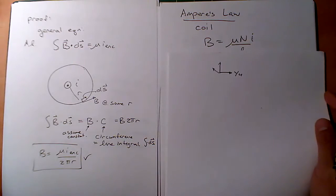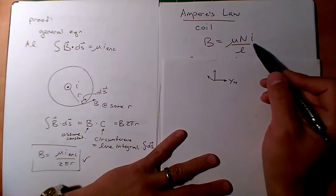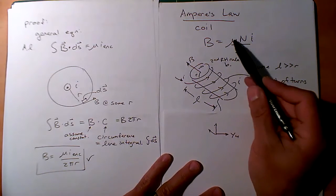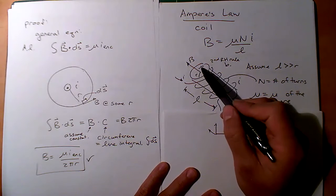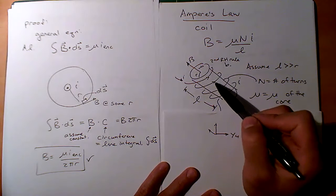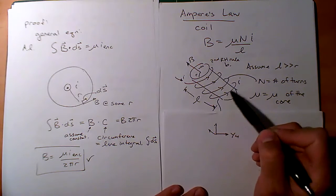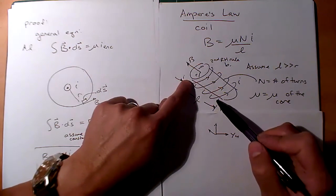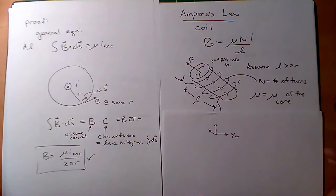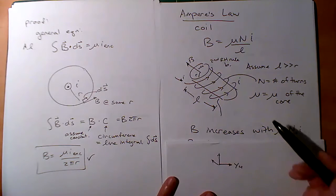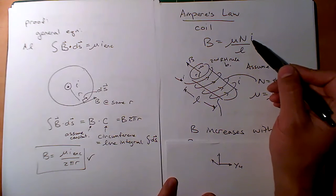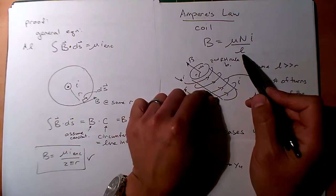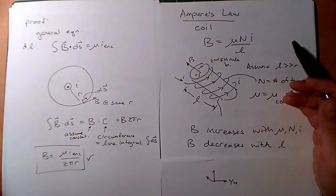For a coil of wire, the equation is slightly different: B = μNI / L. The terms are: mu is the permeability of the core material, N is the number of turns, I is the current in the coil, and L is the stack height (assuming length is much greater than radius — a thin aspect ratio). How does B get bigger? More I, more number of turns N, larger mu, and a shorter stack height L.